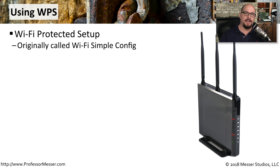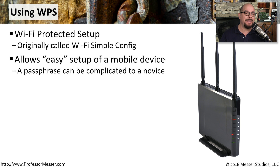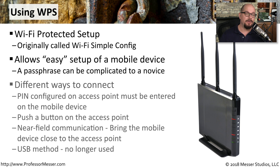During the evolution of wireless networks, we once thought that using shared passphrases might be too difficult for people trying to connect to the network. So we created a new method of authentication called WPS, which stands for Wi-Fi Protected Setup. It was originally called Wi-Fi Simple Config. The idea is that this would be an easy way to connect to a wireless network instead of going through the process of adding a passphrase to a wireless configuration. There are a number of different ways to authenticate using WPS.